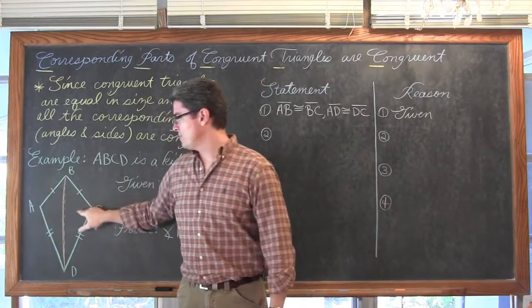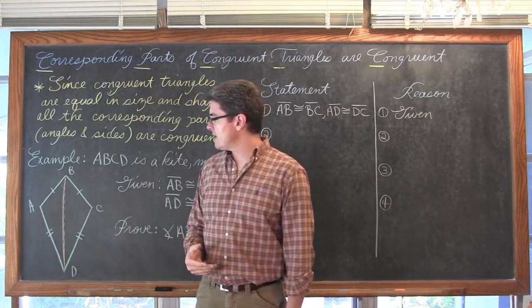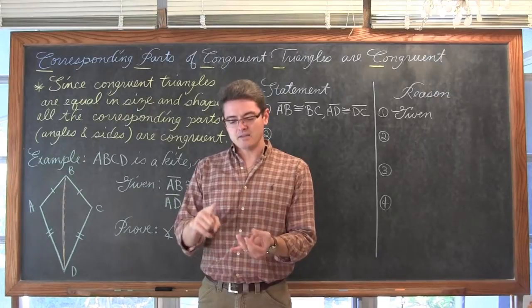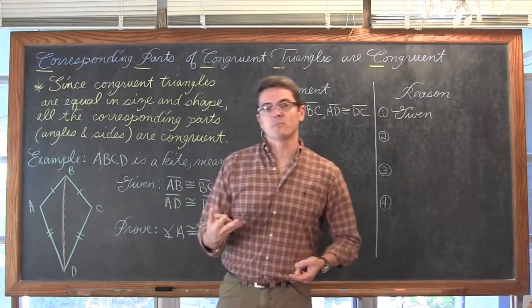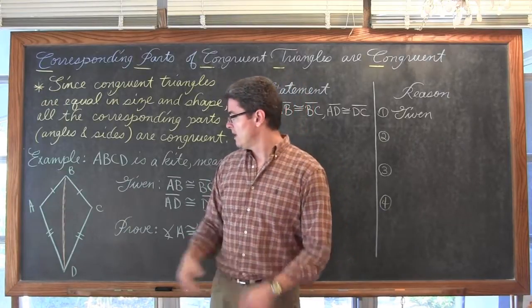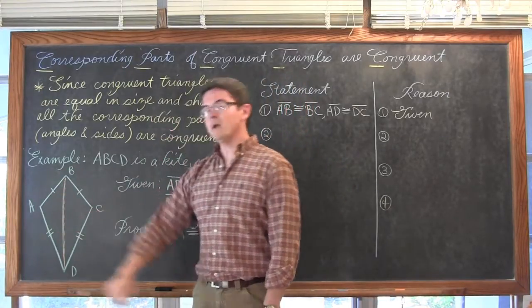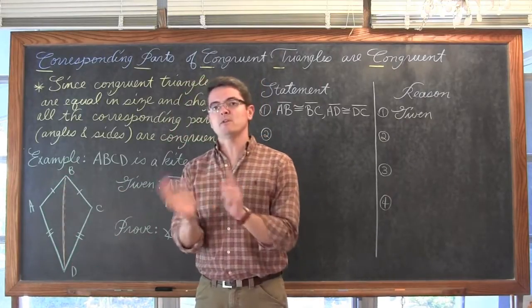So if I want to prove that these two triangles now are congruent, then I have side side side, side angle side, angle side angle, and angle angle side. Those four postulates and theorems that we learned to help prove two triangles are congruent. Well I have got one and two pair of congruent sides, and I have a third side now that is being shared between my two triangles.